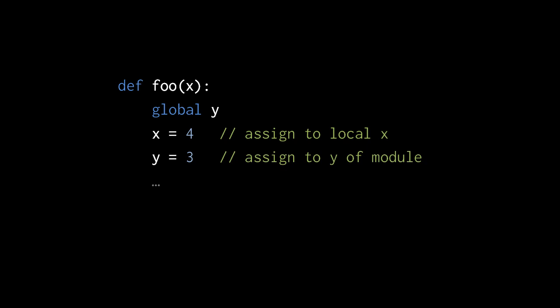The statement global y declares that in this function y refers to a global variable — global here meaning a variable of the module. So the assignment of 3 to y is assigning 3 to y of the module, not a local variable y. There is no local variable y in this function.